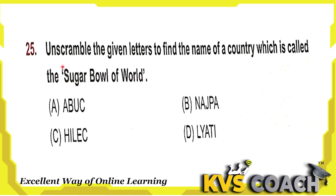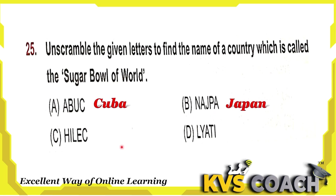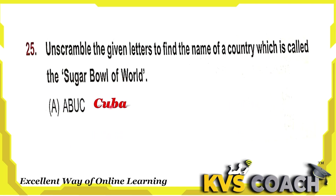Next question: unscramble the given letters to find the name of the country which is called the sugar bowl of the world. Option A is Cuba. Option B is Japan. Option C is Chile. Option D is Italy. The sugar bowl of the world is Cuba, so option A is the right answer.